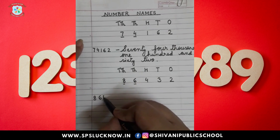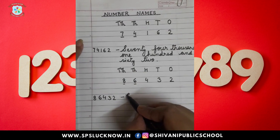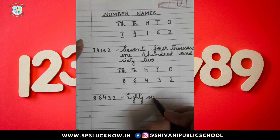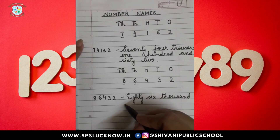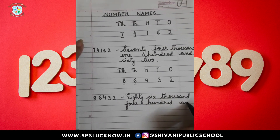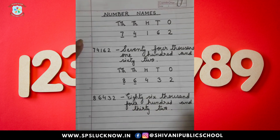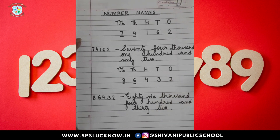So, 8, 6, 4, 3, 2 — eighty-six thousand, four hundred and thirty-two. We can write it like this. Do practice of the number names. Thanks for watching, bye everyone.